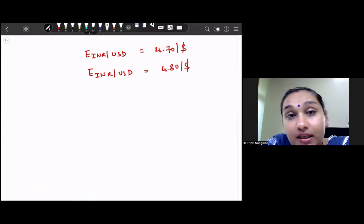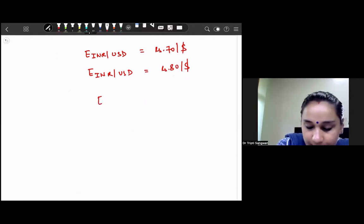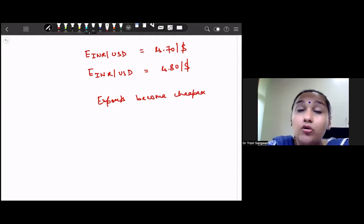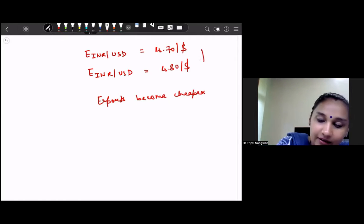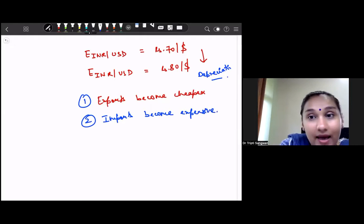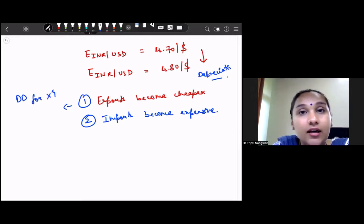So when this happens, it means that our exports become cheaper because the price of rupees per USD, as we can see, there is depreciation here. So first effect of depreciation is exports become cheaper and second effect is that imports become expensive.